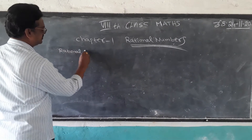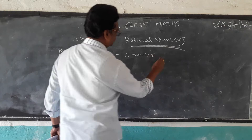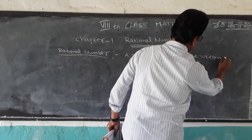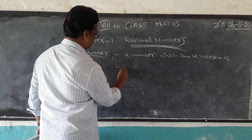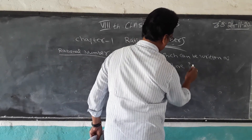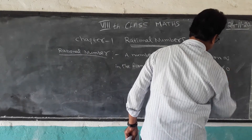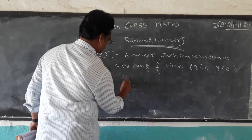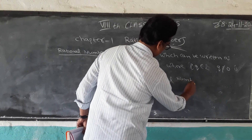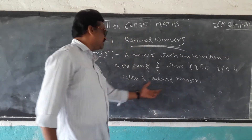A number which can be written in the form of P by Q, where P and Q belong to Z, and Q is not equal to 0, is called a Rational Number.